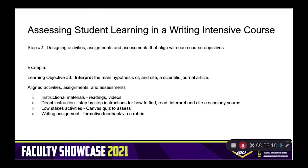Step two in this process for improving the assessment of student learning in this writing intensive course was to design activities, assignments, and assessments that aligned with each of our new course objectives. For example, learning objective number three states that students will interpret the main hypothesis of and cite a scientific journal article. Students had always struggled with citing their sources properly on writing assignments, and they continually made the same mistakes week after week, semester after semester, and we realized that we lacked scaffolding here.